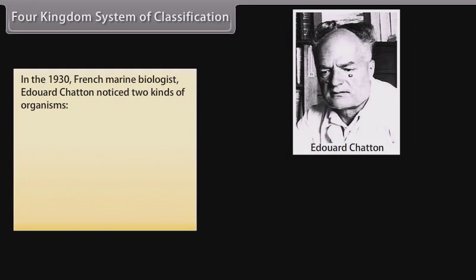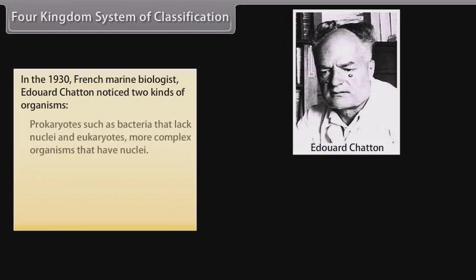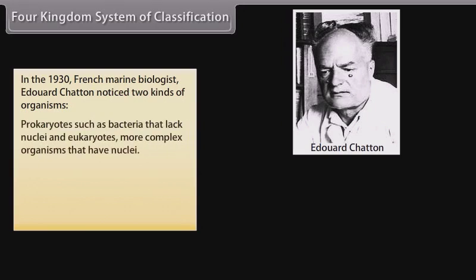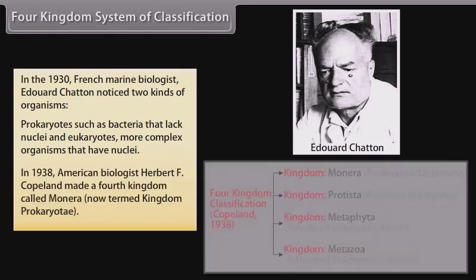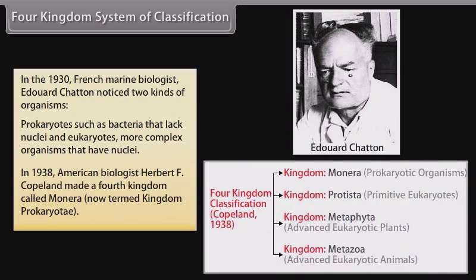Four Kingdom System of Classification: In the 1930s, French marine biologist Edward Chatton noticed two kinds of organisms — prokaryotes such as bacteria that lack nuclei, and eukaryotes, more complex organisms that have nuclei. In 1938, American biologist Herbert F. Copeland made a fourth kingdom called Monera, now termed Kingdom Prokaryote.